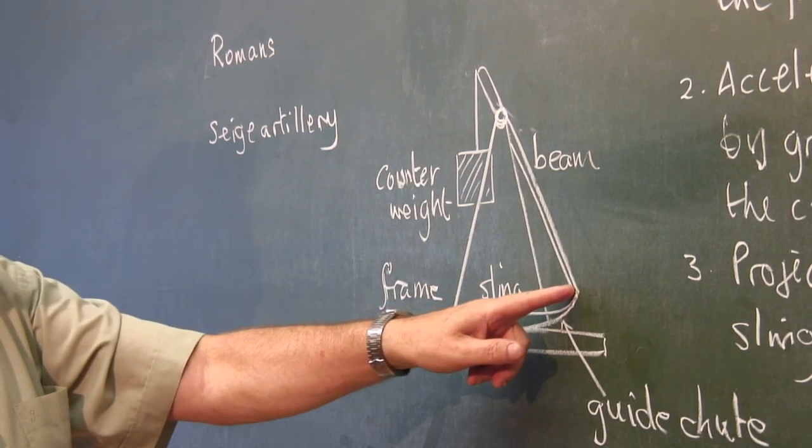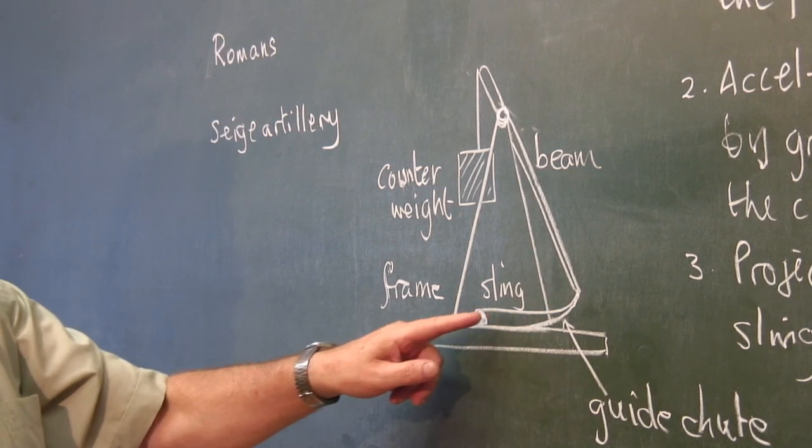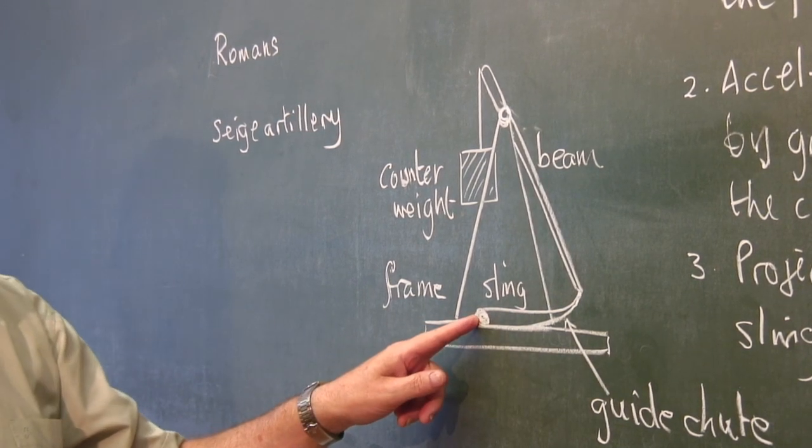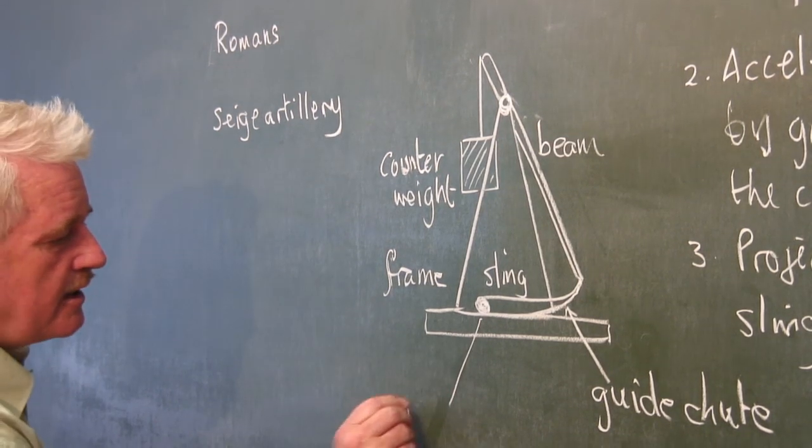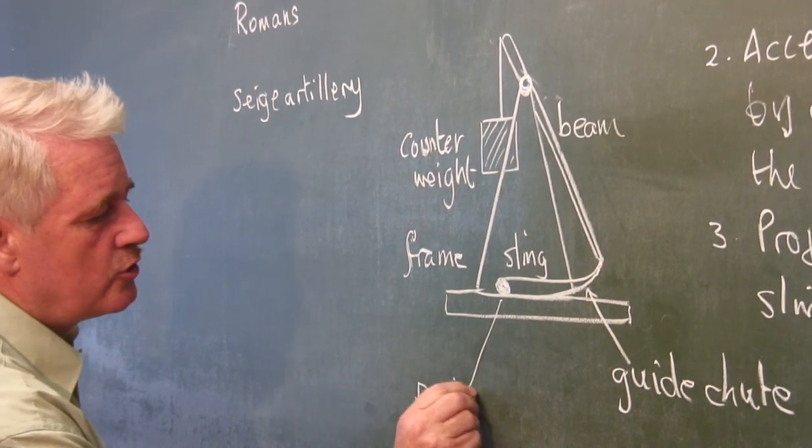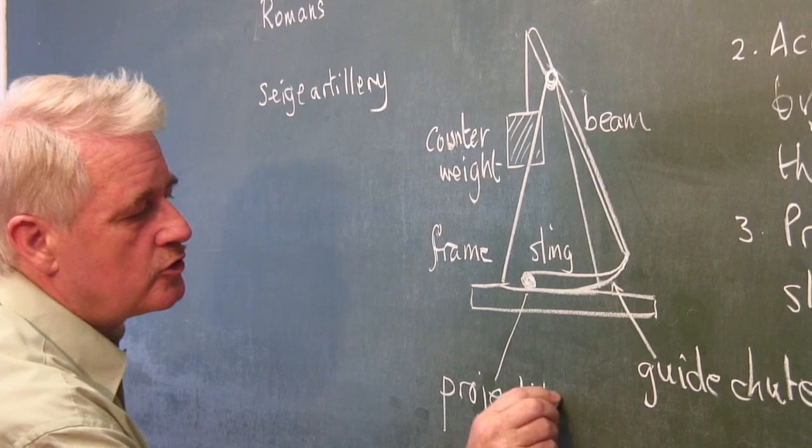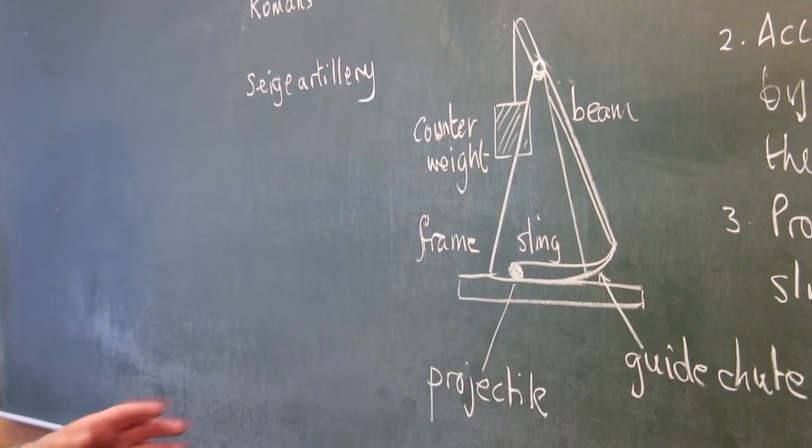And at the other end of the beam was a sling in which the projectile was placed. This is the projectile. This could be a large rock or some other object.